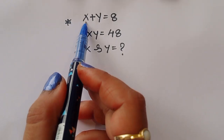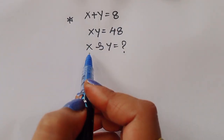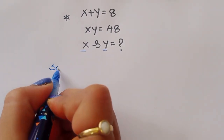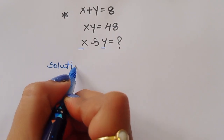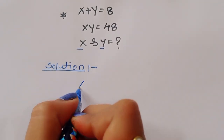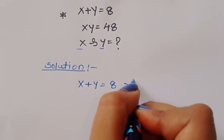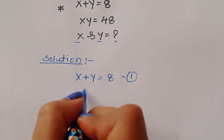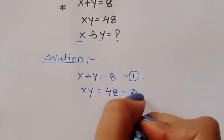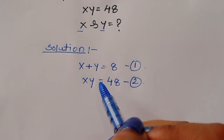The question is: given x plus y is equal to 8 and xy is equal to 48, we have to find out the value of x and y. Let's see the solution. Equation 1 is x plus y equals 8, and equation 2 is xy equals 48.